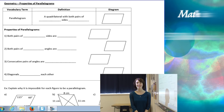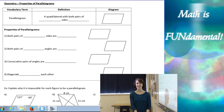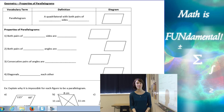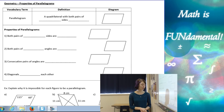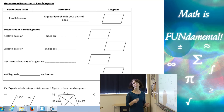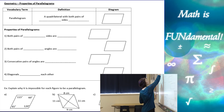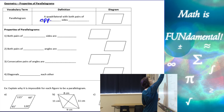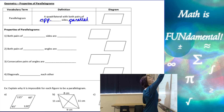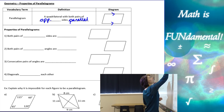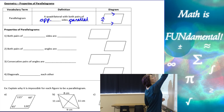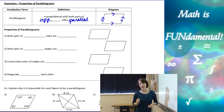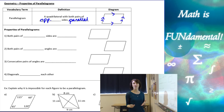Hi class, welcome to Math is Fundamental. Today we're going to be talking about properties of parallelograms. Let's start with the definition of a parallelogram, which is a quadrilateral where both pairs of opposite sides are parallel. On our picture that looks like this, using our arrow symbols — that's our definition, short and sweet.